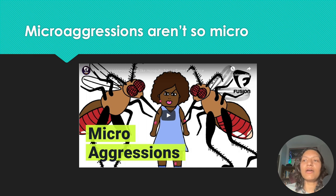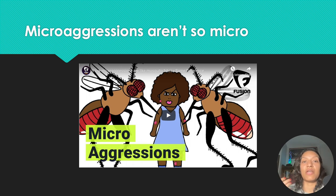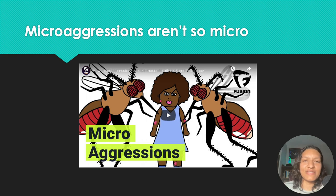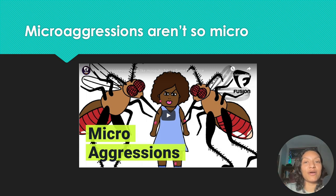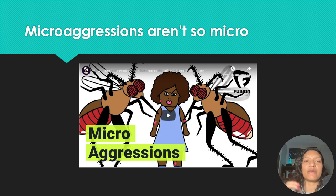I want to highlight and normalize that microaggressions can be really easy to make and not even be aware of it. We've talked about schemas and how we were raised impacts how we think about the world. For example, a couple of years ago I was visiting one of my nieces and I said, 'When are you going to get married? Do you have any plans to have kids?' Looking back, I'm like, oh, that was totally a microaggression — I was making assumptions about her as a woman and what her gender role should be in society.